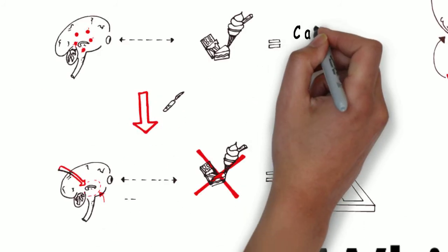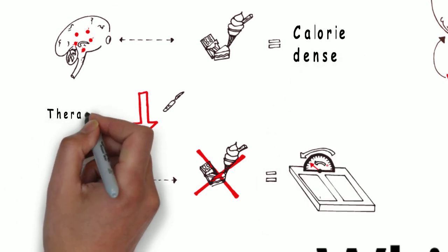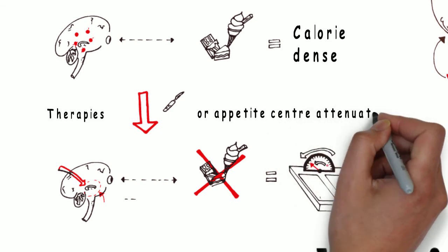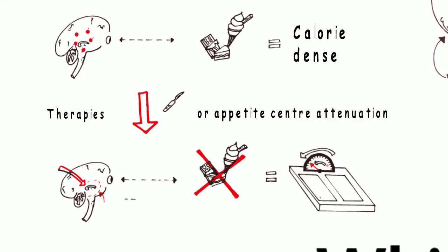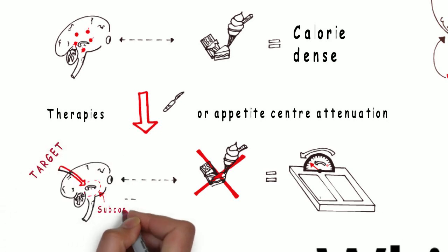In conclusion, calorie-dense food activates brain reward centers. Therapies that attenuate appetite centers also reduce reward areas in the brain. To control appetite and food intake, therapies need to target these subcortical areas of the brain.